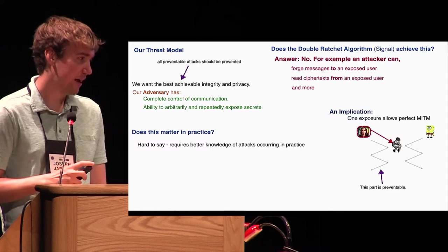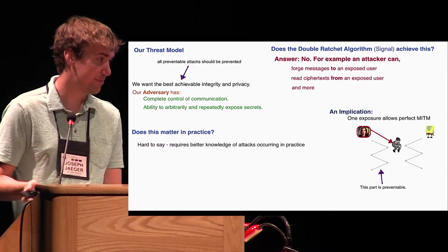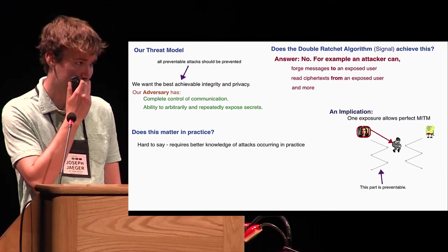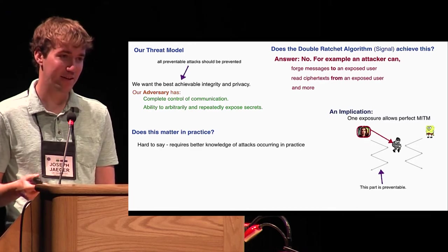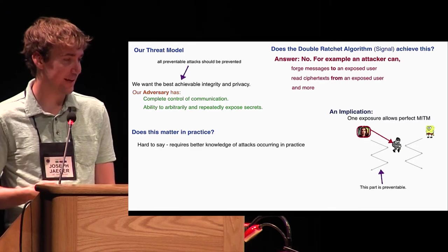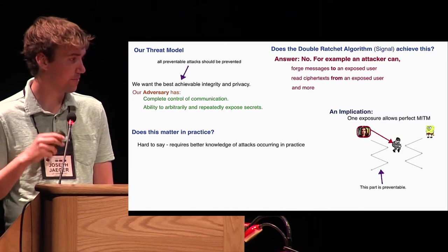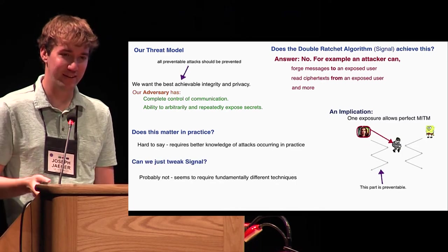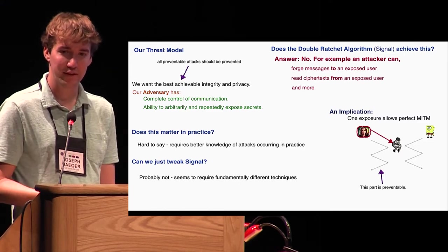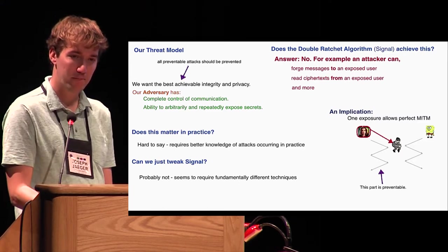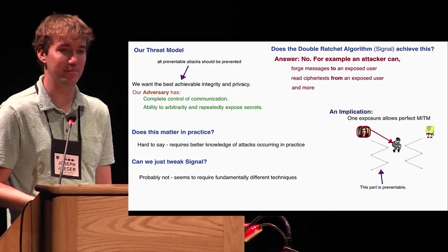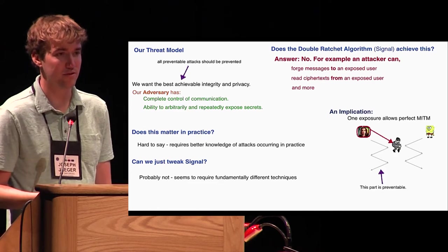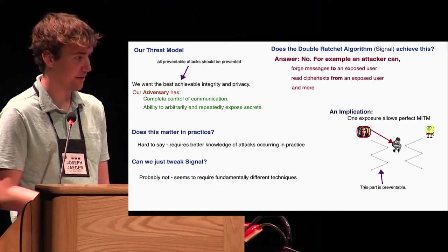Of course then there's the question of how much do attacks like this matter in practice? I can't really give a full answer here. That would require having a better understanding of exactly where such attacks occur in practice than I think we really have currently. And then you might also wonder is there any kind of small tweaks we can make to Signal to meet these stronger notions of security? I can't say definitively, but it doesn't seem like it. It seems like this stronger notion of security we defined really requires stronger primitives than is used in Signal.